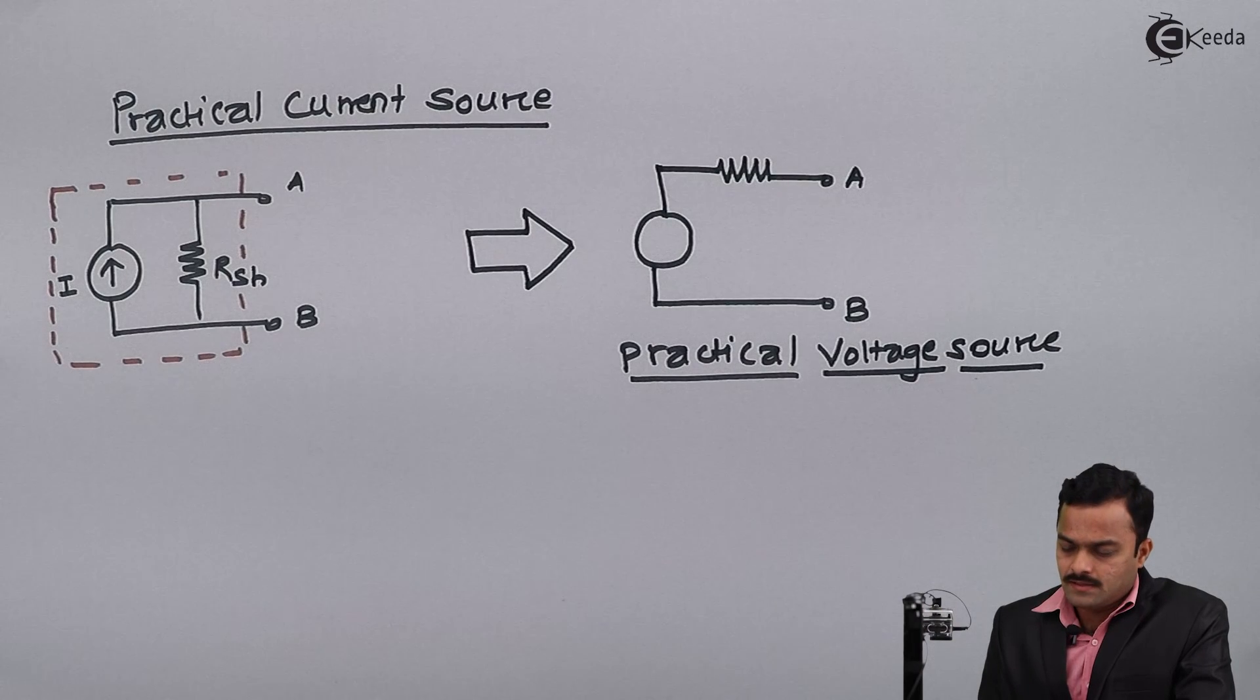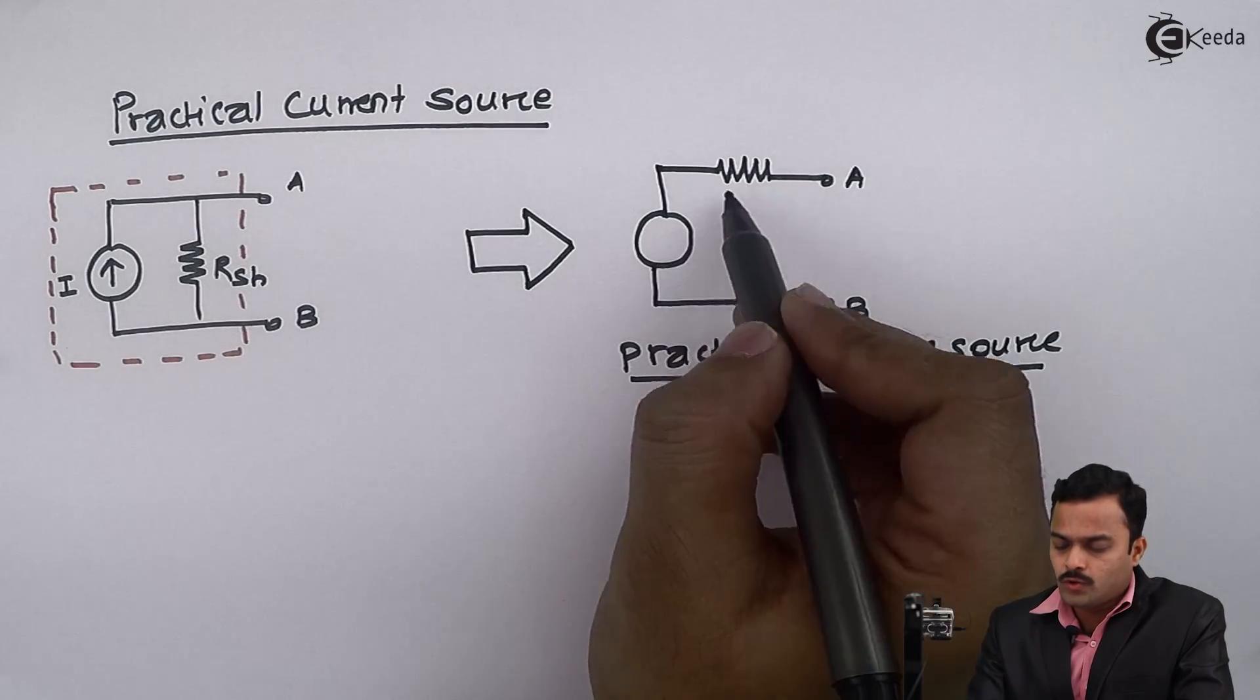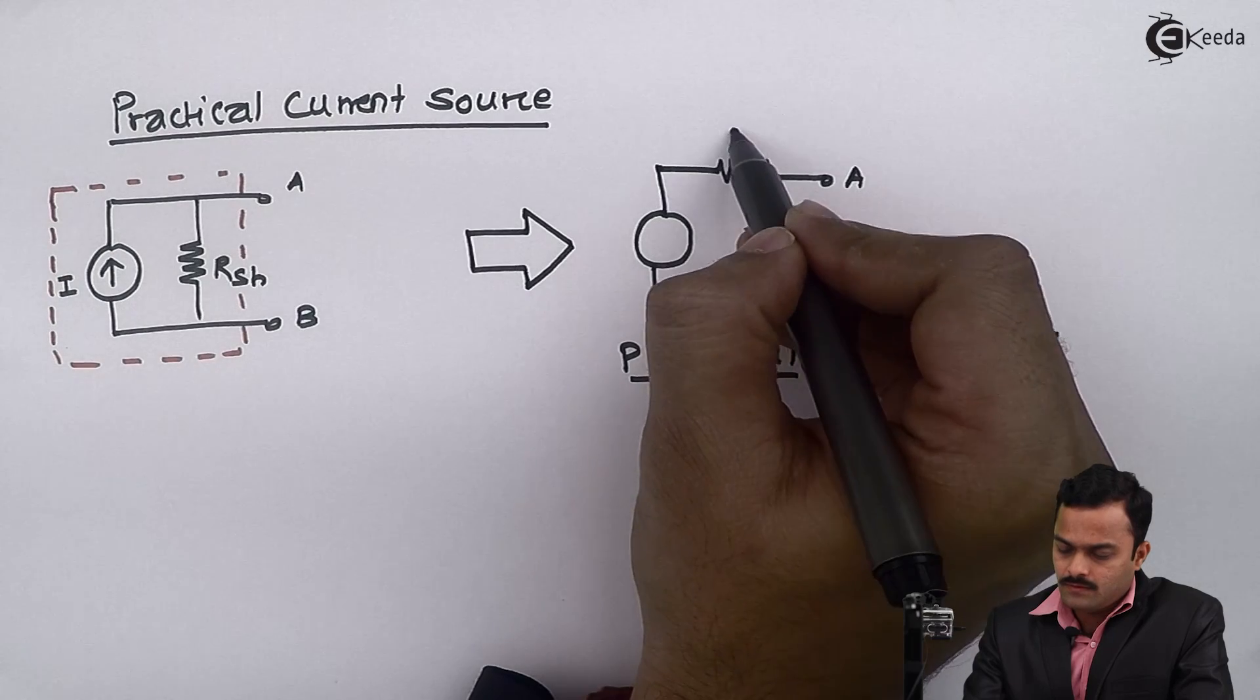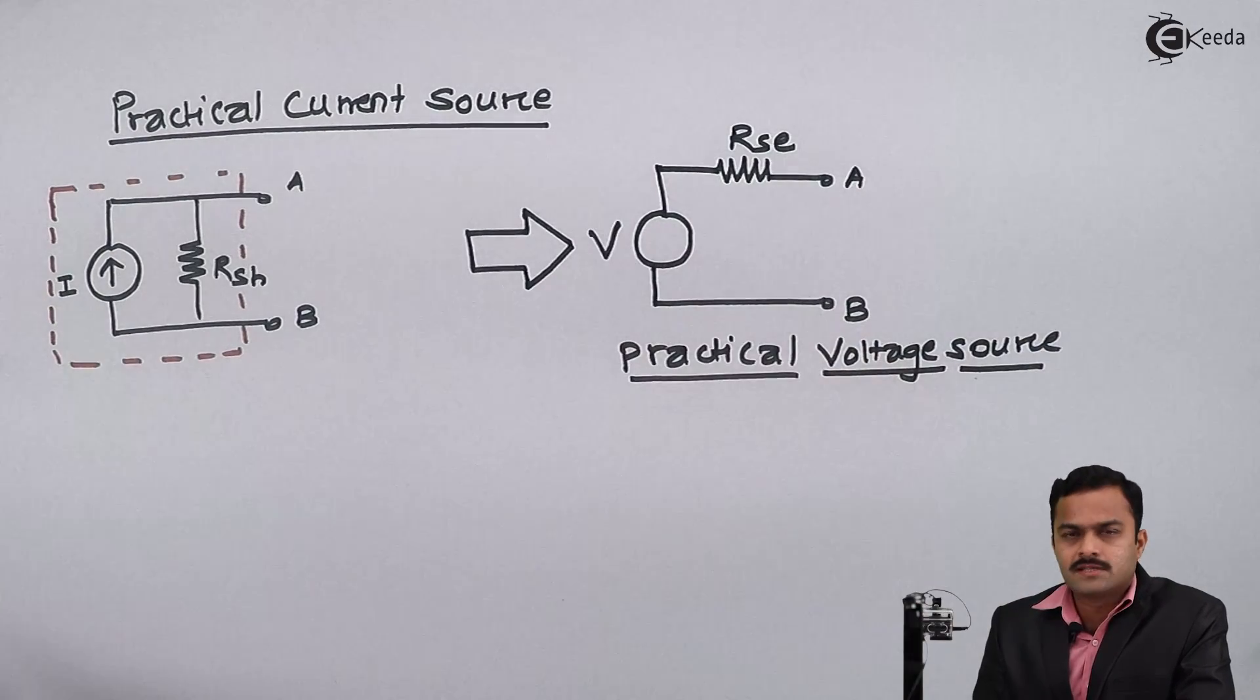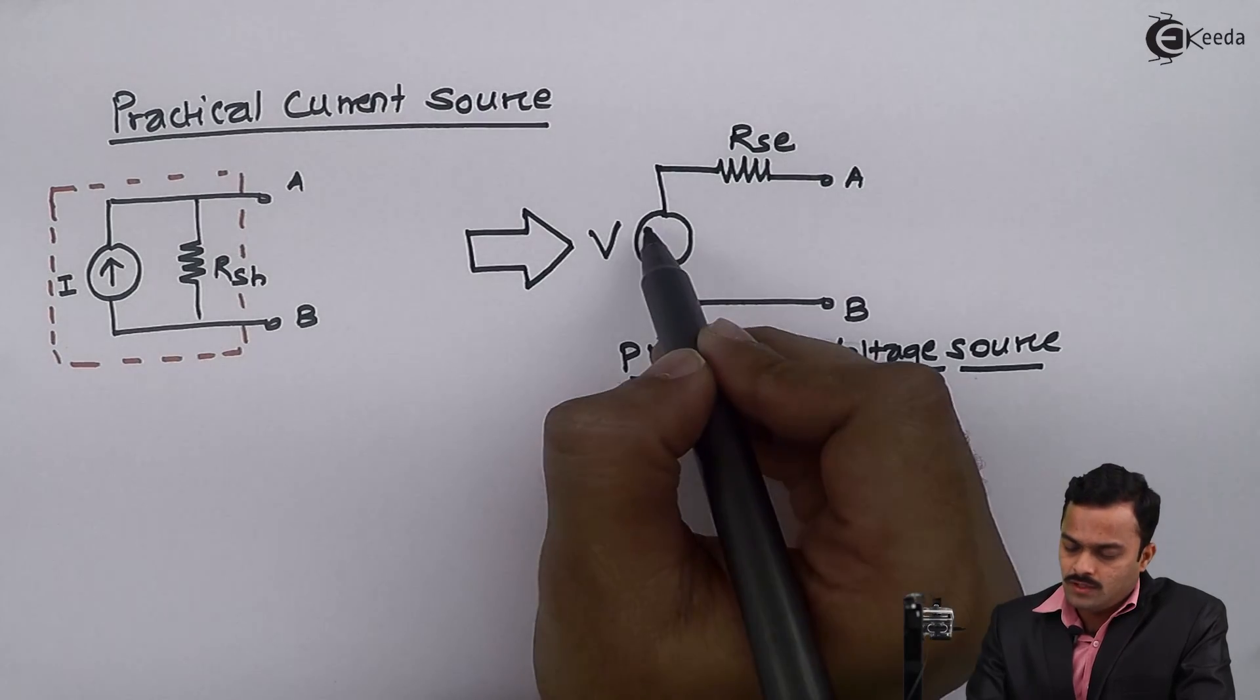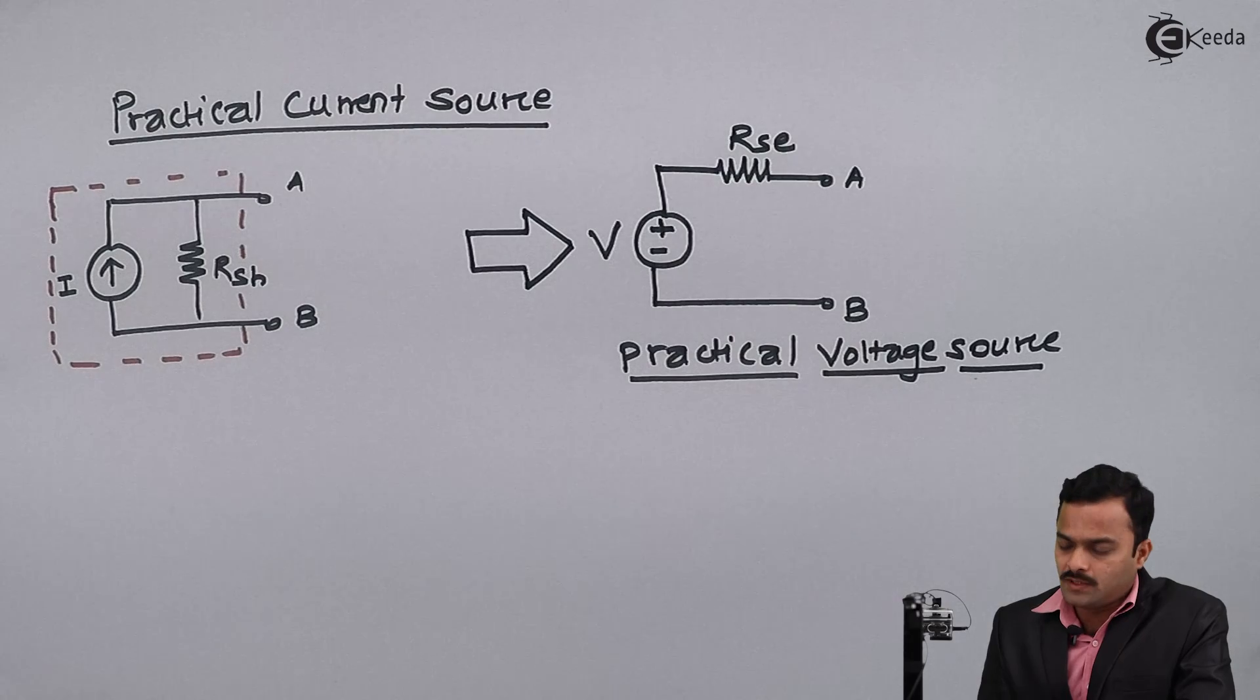Now see the difference, because not just drawing is enough, we need to correlate this term. What I want here now, two elements will be here. One is this series resistor and this voltage V. The polarity will be like this. I will discuss how to determine the polarity.